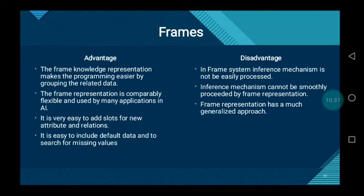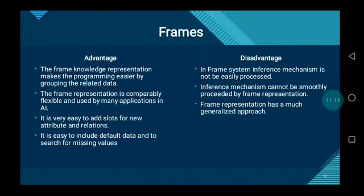The advantages of frames are: frame knowledge representation makes programs easier by grouping related data; frame representation is comparably flexible and used by many AI applications; it is very easy to add slots for new attributes and additions; and it is easy to include default data and to search for missing values. The disadvantages of frames are: the frame system inference mechanism is not easily processed; inference mechanisms cannot be smoothly processed by frame representation; and frame representation has a generalized approach.